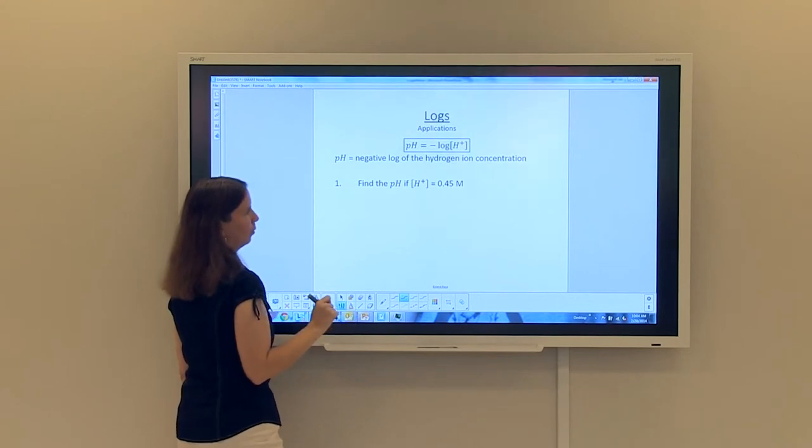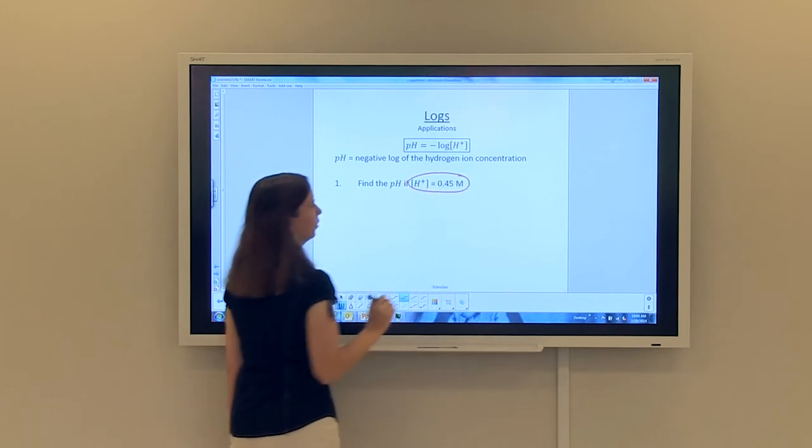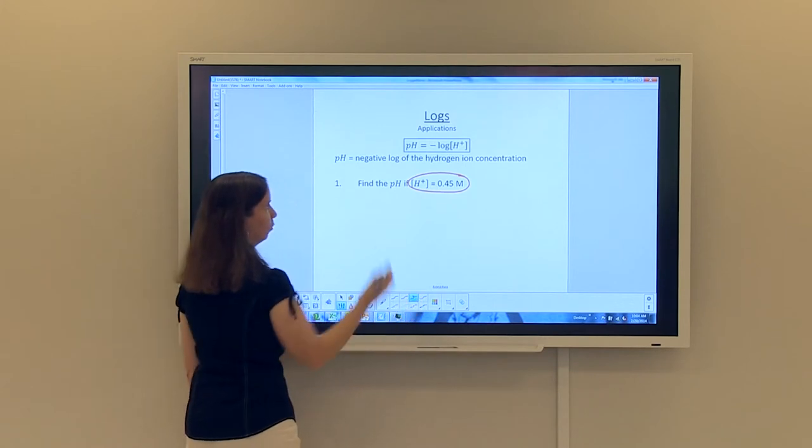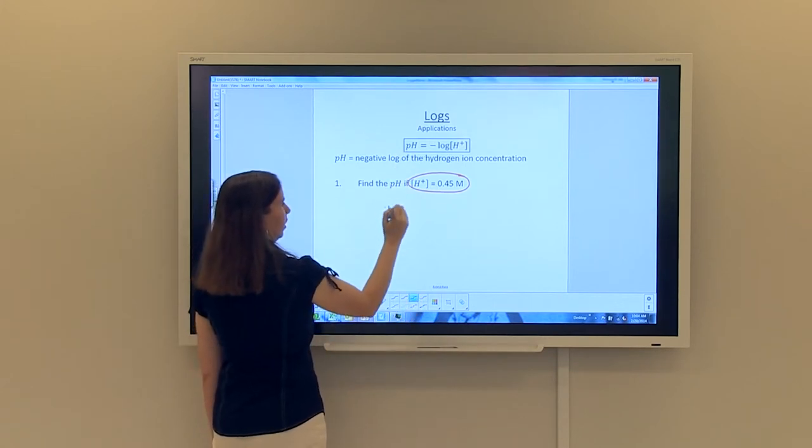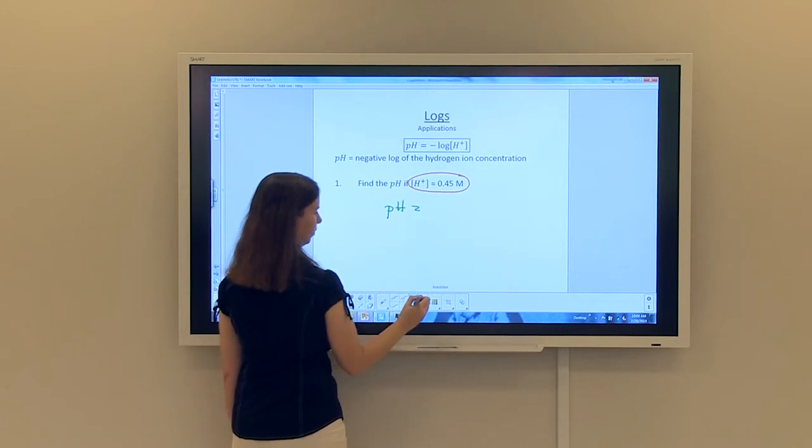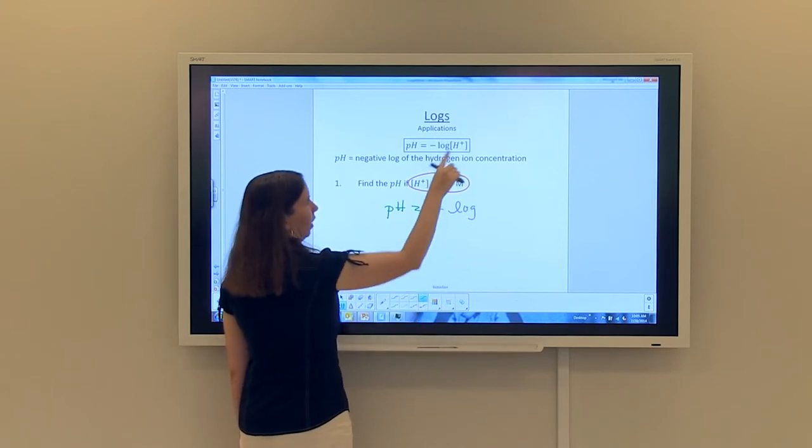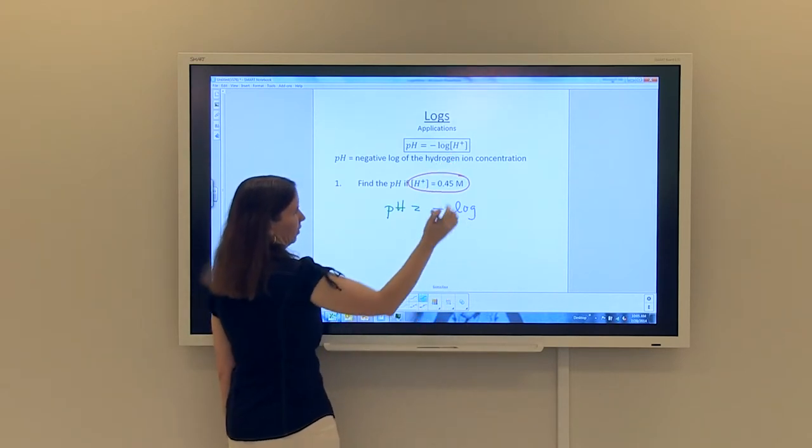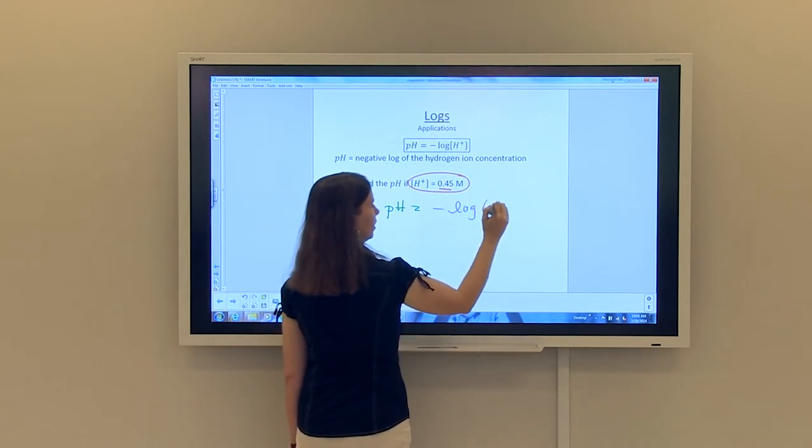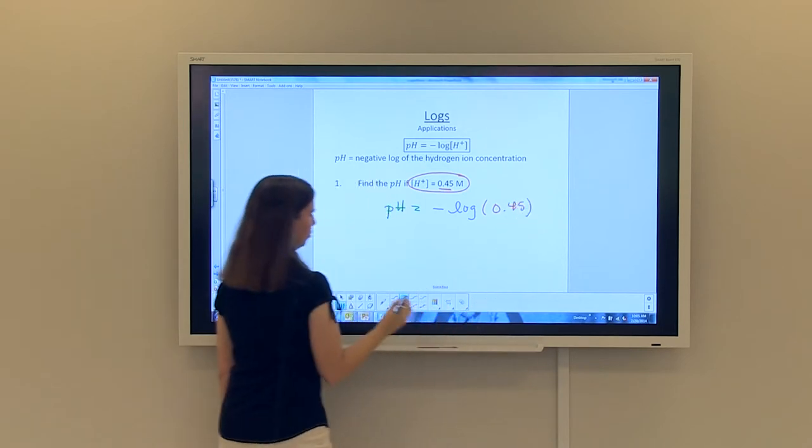So the first problem says to find the pH if the hydrogen ion concentration is 0.45 molars. I'm simply going to plug back into the formula. So using this formula, pH is equal to negative log of the hydrogen ion concentration. Well, the hydrogen ion concentration was given to us as 0.45 molars. And at this point, very simple.